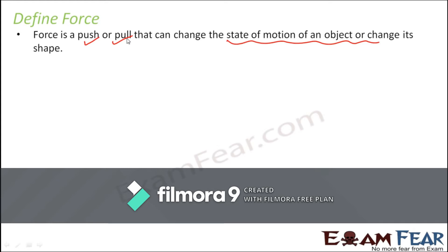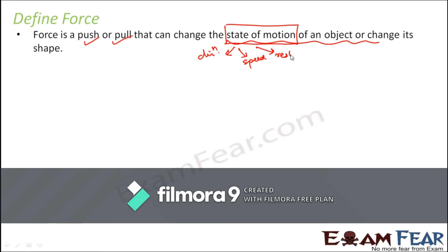What do we mean by state of motion? It refers to how an object is moving — whether the object is stationary, whether it is moving, how fast or slow it is moving, and in which direction it is moving. All these together define the state of motion. So state of motion includes the direction of motion, the speed at which the object is moving, and whether the object is at rest or in motion.